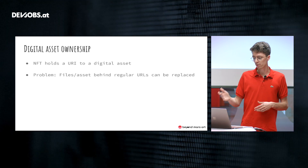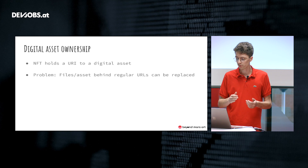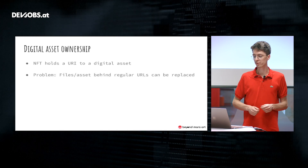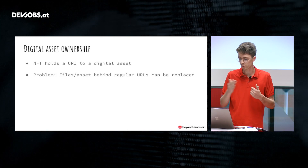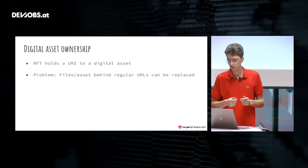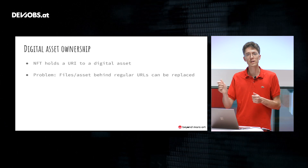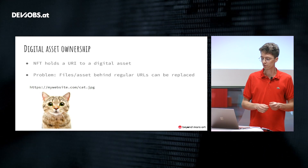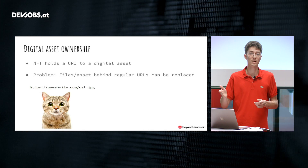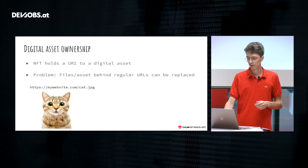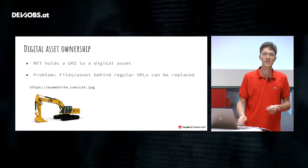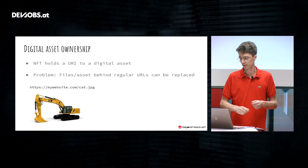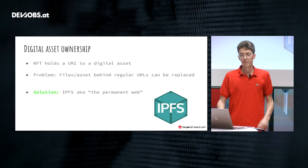At Beyond Mars Art, we work on an art marketplace, so I want to take a closer look at digital asset ownership. As I explained, NFTs hold a URI to a digital asset. However, there's a problem: if this URI is a regular URL, the actual content behind it can easily be replaced by the server admin. For instance, a URL pointing to mywebsite.com/cat.jpg could at some point be replaced with a very different image — an excavator. This is not what you want with NFTs; you want the reference to be immutable, always pointing to the exact same thing.